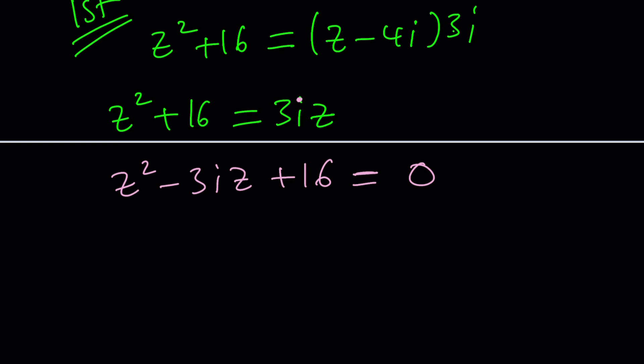z equals negative b. Remember, b is the coefficient of z, which is negative 3i. So the opposite of that plus minus the square root of b squared. You're going to square negative 3i. You can also square 3i, by the way. It doesn't matter. b squared and negative b quantity squared are the same because even if they are complex numbers, they are still the same. That's why a complex number has two square roots, but that's another story. Anyways, what's b squared? 9i squared. That's negative 9. Minus 4 times a times c. A is 1, c is 16. 4 times 16 is 64, but that's negative, right? Okay.